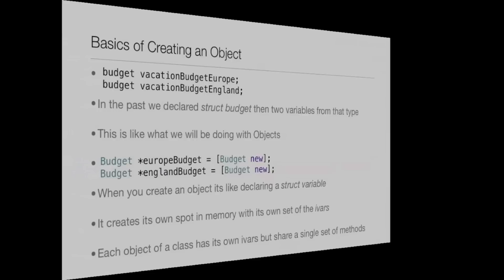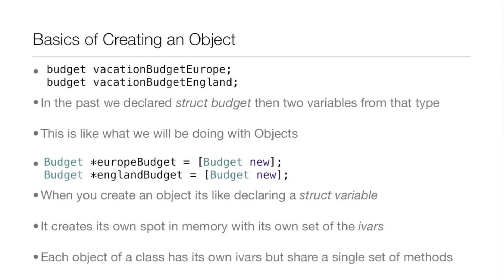Now the basics of creating an object — we won't be going over how to create an object in the slides, just what happens when you create one. Up above you see 'budget', 'vacation budget', 'Europe', and 'budget vacation budget' — you remember when we did the whole thing with structures and typedef, when we made that type and were declaring variable types from it. That's basically what we'll be doing with objects: creating a class as a type, then creating objects from it. When you create an object it's like declaring a struct variable — it creates its own spot in memory with its own set of IVARs (instance variables), and each object of a class has its own IVARs but shares a single set of methods.